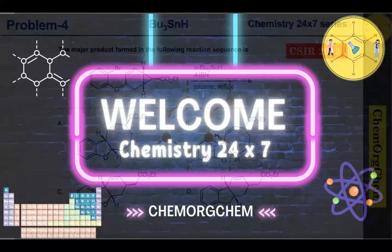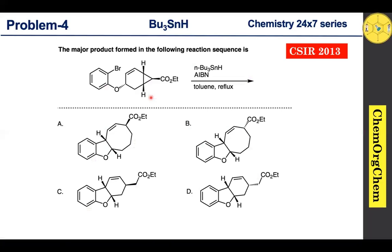This problem is from CSIR 2013. According to this question, this substrate reacts with tributyl tin hydride in the presence of AIBN to produce a product. There are four options — let's figure out together which one is the correct answer.